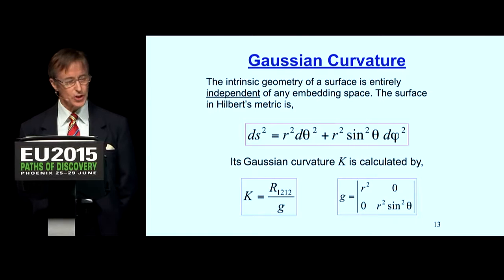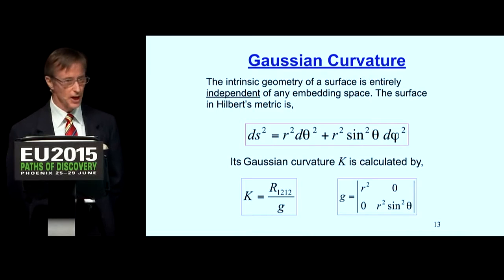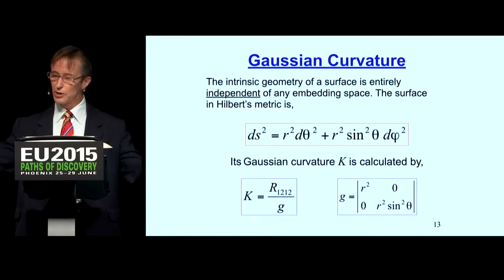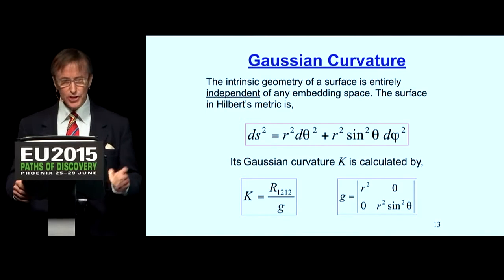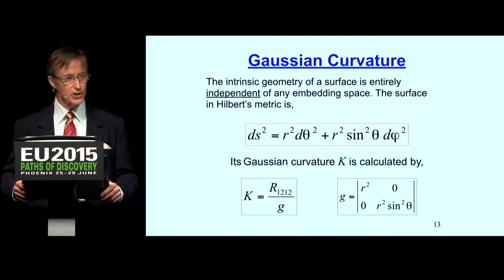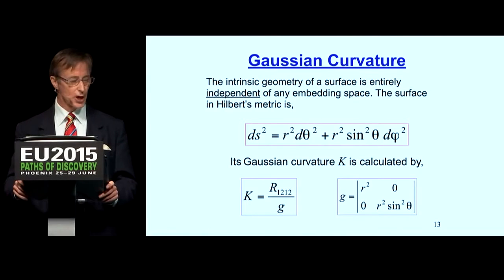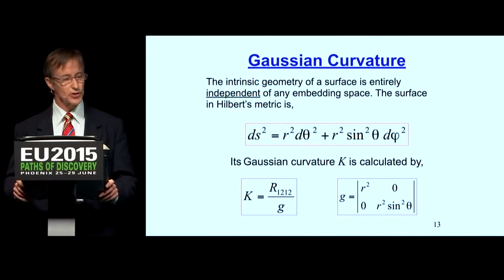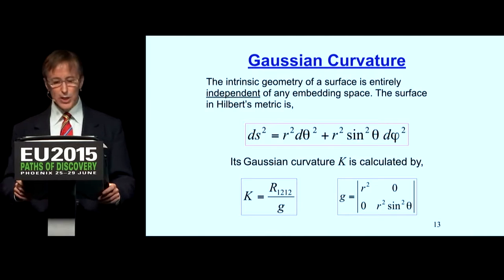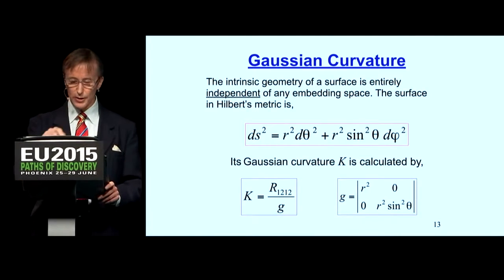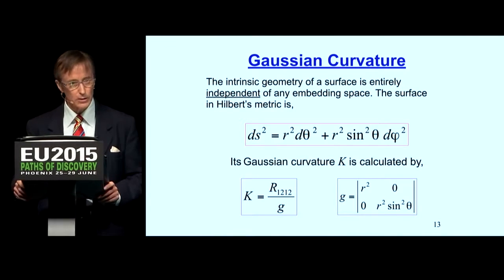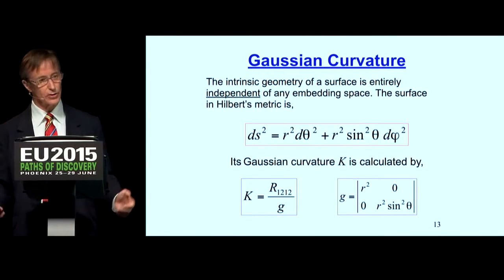We want to calculate Gaussian curvature to identify what R is in Hilbert's metric and determine whether it can go down to zero. The intrinsic geometry of a surface is completely independent of any embedding space — Gauss proved that. The surface in Hilbert's solution has only two variables, theta and phi; R is not a variable, there is no dr, R is a fixed quantity assigned some value.